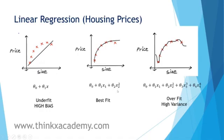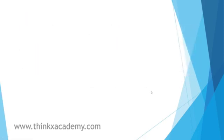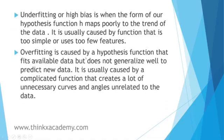We need to reduce some of the features to come up with the best-fit equation. If we have an overfit example and we remove the x3 and x4 features, we will get the equation of the best fit. Overfitting is basically caused by a hypothesis function that fits the available data but does not generalize well to predict new data. It is caused by a complicated function that creates a lot of unnecessary curves and angles unrelated to the data.